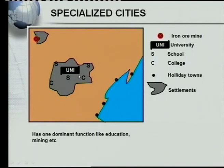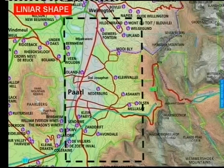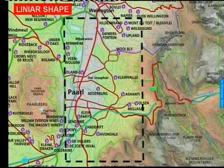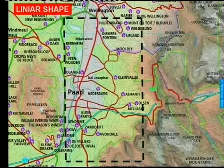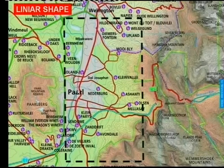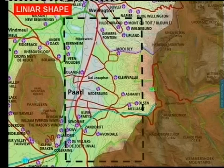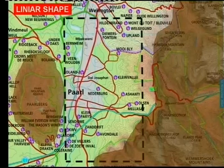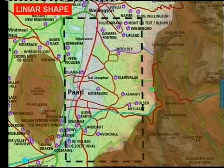You must also know the shape of your urban settlements. The first shape is a linear shape. Looking at this diagram, the settlement called Paarl has mountains preventing it from expanding east or west, so it can only grow north or south — that is why Paarl has a linear shape.